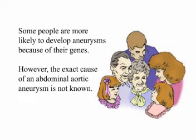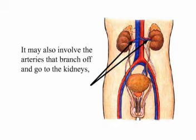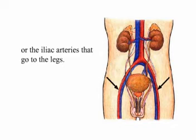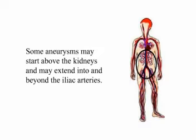Some people are more likely to develop aneurysms because of their genes. However, the exact cause of an abdominal aortic aneurysm is not known. An abdominal aortic aneurysm may only involve the aorta and no other branches. It may also involve the arteries that branch off and go to the kidneys, or the iliac arteries that go to the legs. Most abdominal aortic aneurysms start below the level of the kidneys. Some aneurysms may start above the kidneys and may extend into and beyond the iliac arteries.